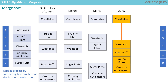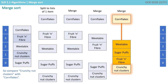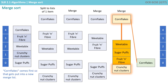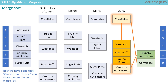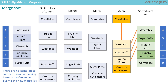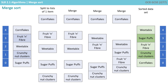We repeat the process by comparing the bottom item of the bottom list with the bottom item of the top list. Cornflakes comes first, so we compare Crunchnut Clusters with Cornflakes. Cornflakes comes first, so that gets put into a new merged list. Crunchnut Clusters can then move over to the new merged list. And what we've ended up with is the sorted dataset.